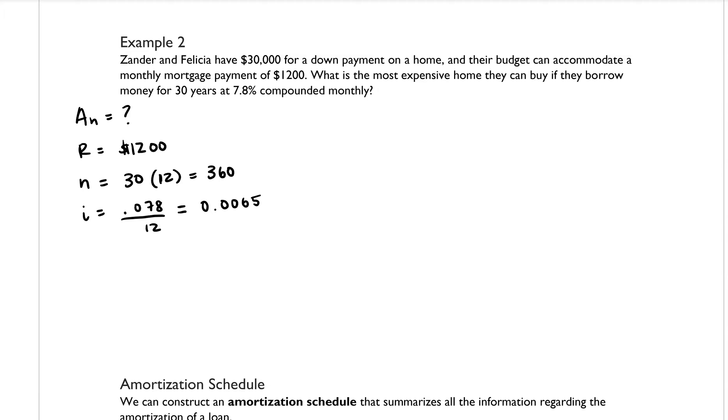And now we can go ahead and plug these values into our formula. So we have R is equal to A sub N times I over 1 minus 1 plus I to the negative Nth power. So we know R is equal to 1,200, A sub N is our unknown value, so I will just leave that there. I is 0.0065.